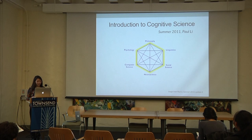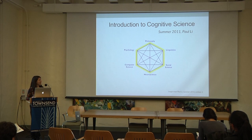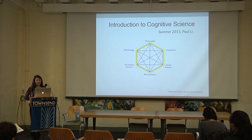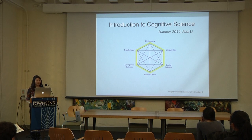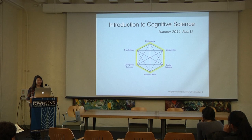The first course I took was in summer 2011: Introduction to Cognitive Science. This was my first introduction to the field. I learned that cognitive science is the interdisciplinary approach to studying the mind, drawing from research in psychology, philosophy, linguistics, computer science, neuroscience, and various social science fields. This is what first got me thinking about declaring my major, because I was really excited about the breadth of it.